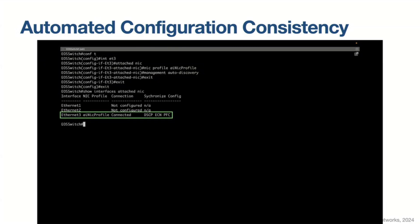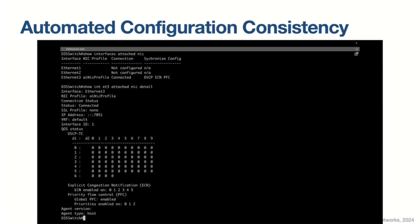Over that connection, we can sync configuration. Here you can see we've synced DSCP configuration, ECN configuration, and PFC configuration. We can then go from the switch and see what is actually configured on the NIC — remarking, remapping, ECN, and PFC. One very common issue we see in networks is that the QoS configuration on the network is different from the QoS configuration on the servers, which leads to poor behavior. Using something like this, where you're configuring all of the QoS for the entire network in one centralized place, you can avoid these inconsistencies and make sure the configuration that's actually optimized is deployed everywhere.